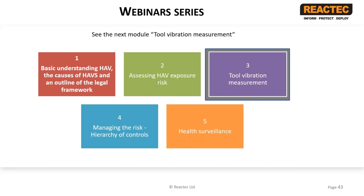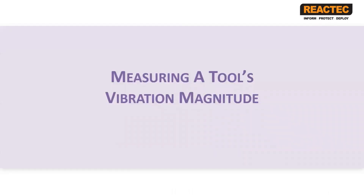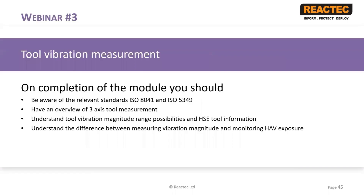In this third webinar we will look at the topic of measuring a tool's vibration magnitude. From this webinar you would be expected to become aware of the relevant standards such as ISO 8041 and ISO 5349, have an overview of three-axis measurement of a tool's vibration, understand that a tool will have a range of vibration magnitudes, and gain an understanding of the difference between measuring vibration magnitude and monitoring hand-arm vibration exposure.